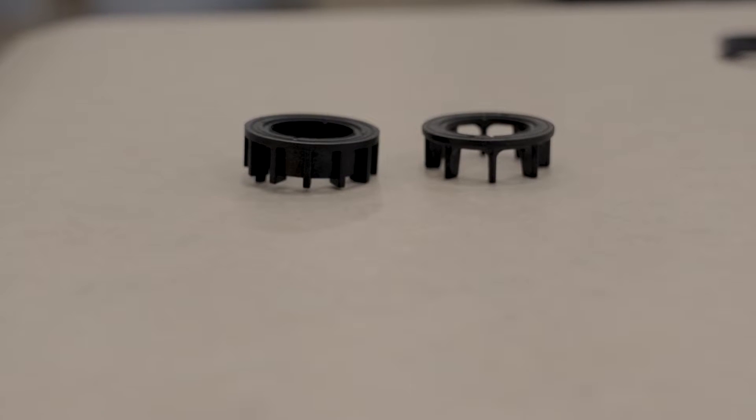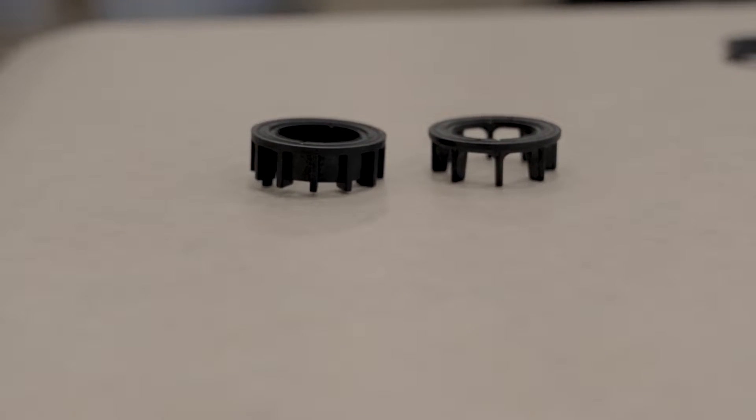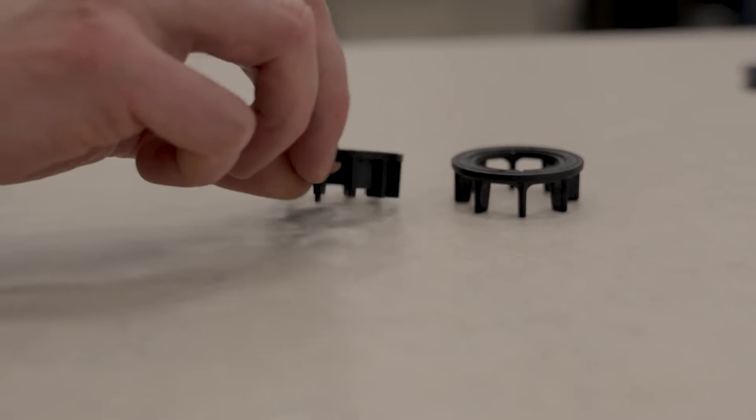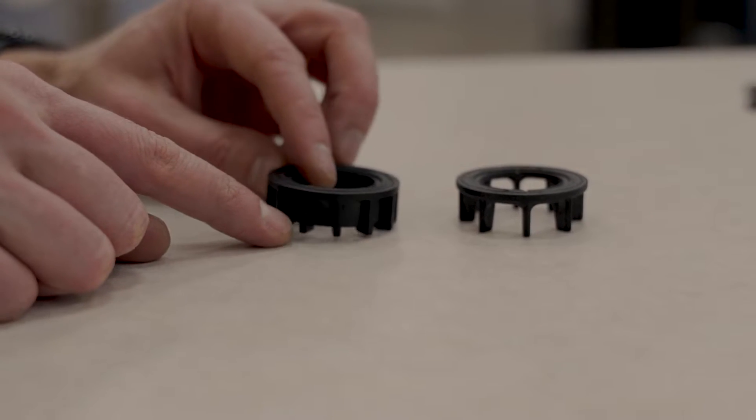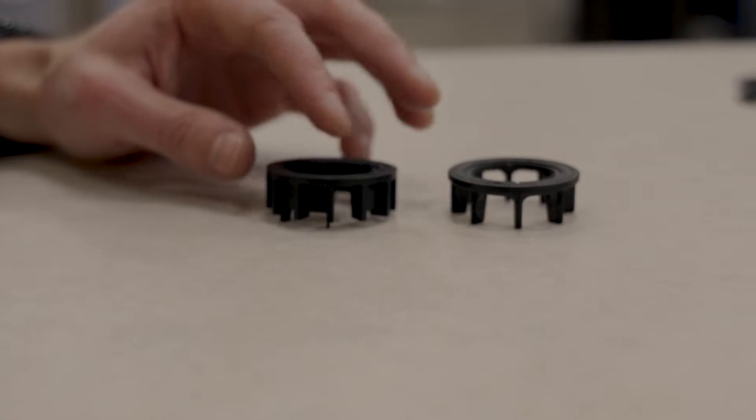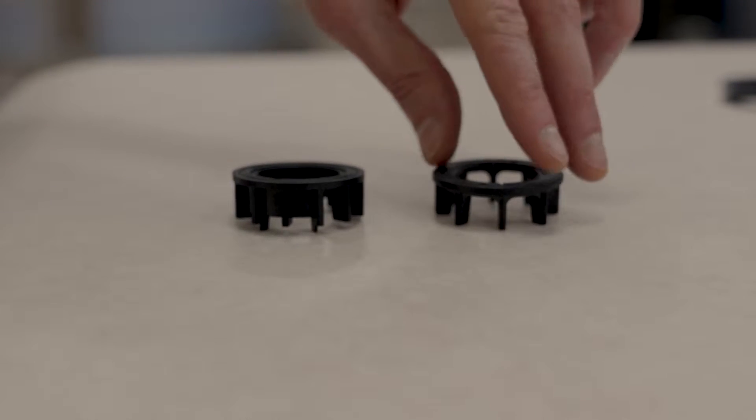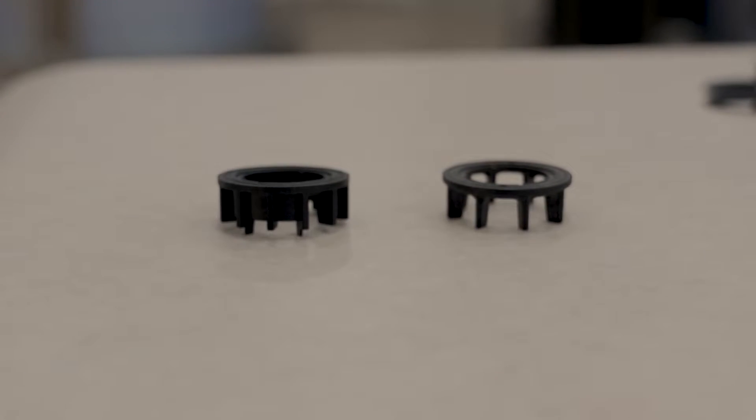You can leave it in there or if you pull it out, just be sure to put it back in. If you have the old style, you'll see it has two teeth that are a little bit longer than the others, so you'll need to make sure to put that in the correct direction. If you have the new style, it can be dropped in anyway.